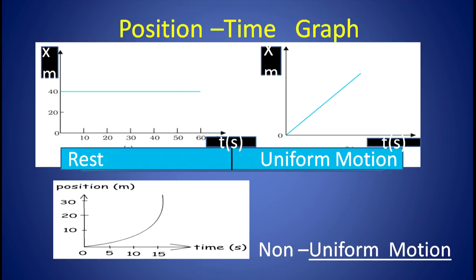For uniform motion, the position-time graph is a straight line, and for non-uniform motion it is a curve. You can see the position-time graph for uniform and non-uniform motion on the screen. The position-time graph for a body at rest is a straight line parallel to the time axis, as the body is not changing position with time. But for uniform motion, the position-time graph is a straight line inclined to the time axis. For non-uniform motion, the position-time graph is a curve. We will discuss graphs in detail in another session.